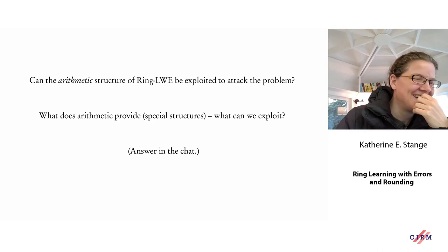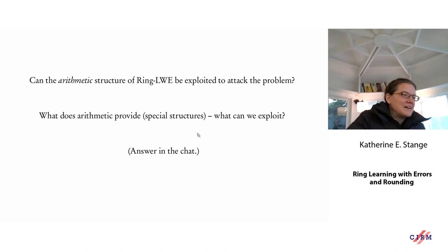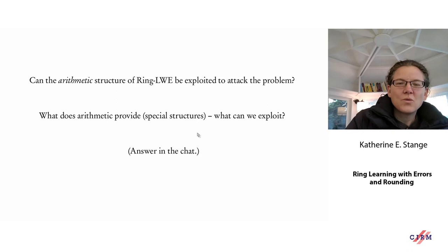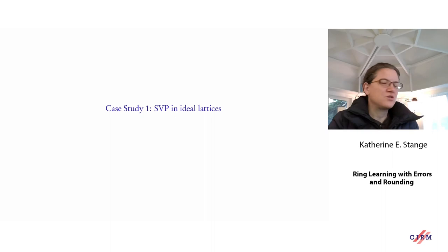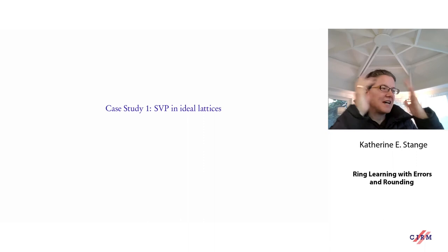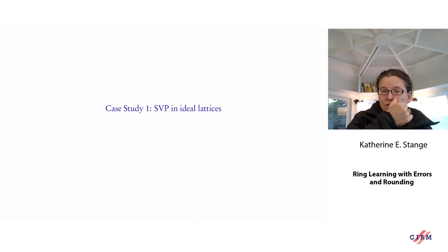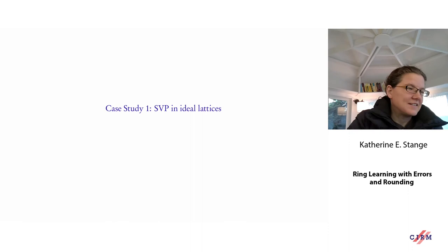Pretty much everything you can think of from number theory is potentially useful here. I want to give three case studies — examples of using number-theoretic structure to attack these lattice problems. The first isn't about Ring LWE at all but is a beautiful story: amazing work on the Shortest Vector Problem in ideal lattices. The question is whether SVP can be attacked more easily using the number theory of an ideal lattice — an ideal in a number field under the Minkowski embedding — versus a general lattice in R^n.